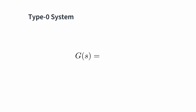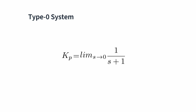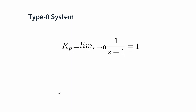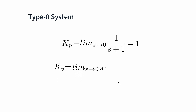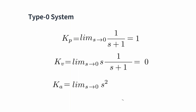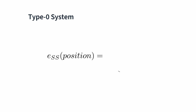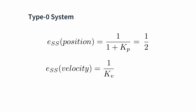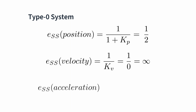Now let's look at how these error constants depend on the type of the system. Let's start with a type zero system, where the s in the denominator is first order. As an example, let's consider a simple system modeled as 1 over (s + 1). For Kp, we take the limit of this system as s goes to zero — we get 1 over 1, so Kp is 1. If we multiply G(s) by s and take the limit, we get s over (s + 1), giving us 0 over 1, which is 0. Ka, where we multiply G(s) by s squared, gives us s squared over (s + 1); when s goes to 0, we end up with 0 again. So for our errors: position is 1 over (1 + Kp), which gives us 1/2; velocity is 1 over Kv, so 1 over 0 gives us infinity; and acceleration is 1 over Ka, which is also 1 over 0, giving us infinity again.